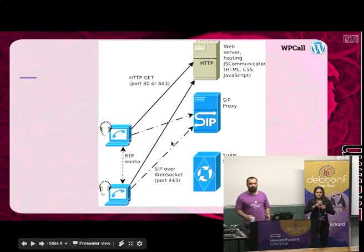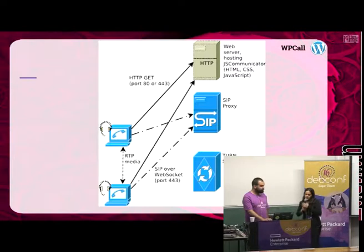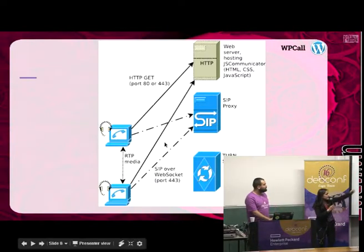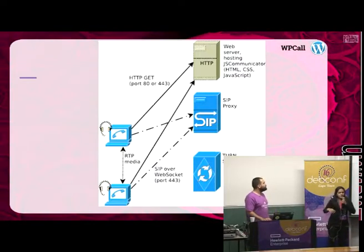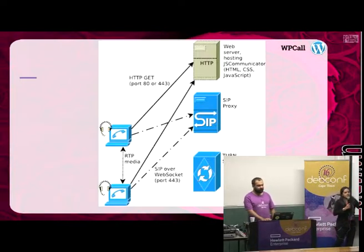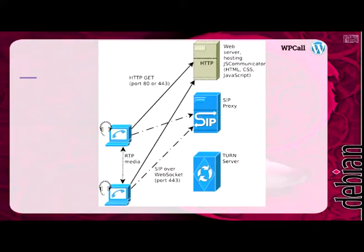We can use a TURN server if we are behind a NAT. JS Communicator is the user-end code that you integrate into your website. When using the WP call plugin, JS Communicator is inside the plugin. But you can also host WebRTC directly from your HTML page using JS Communicator. It is a very elegant and simple piece of code, written with HTML, CSS, and JavaScript, and you can integrate it into any web page.